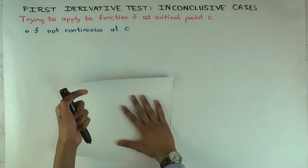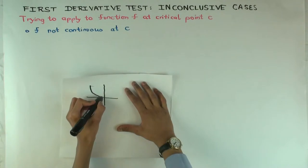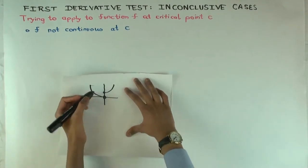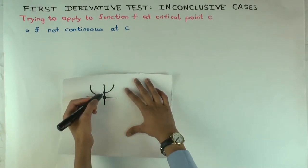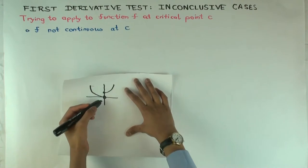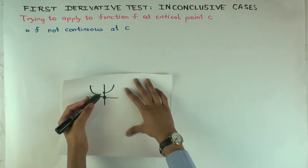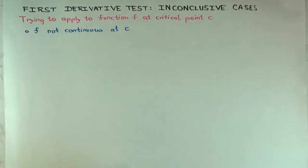For example, you could have a function that is decreasing on the immediate left and increasing on the immediate right, and you might say, 'therefore it's a local min.' But actually it's not a local min, because at the point the function has jumped up. So if you try to use the first derivative test on a function that is not continuous, you could get incorrect conclusions. That's the first problem.